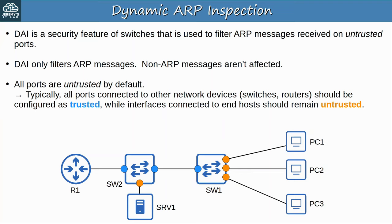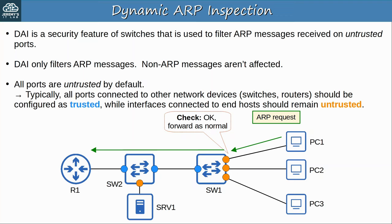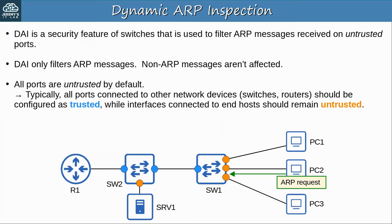Here's how DAI works — basically the same as DHCP snooping. PC1 sends an ARP request. Because it arrives on an untrusted port, SW1 uses DAI to inspect it. It determines the message is okay, so it forwards it to SW2. SW2 doesn't inspect it because it receives the message on a trusted interface, so it forwards it to R1, which sends the reply. This reply isn't inspected by SW2 or SW1 because they receive it on trusted interfaces. If PC2 sends an ARP message, SW1 inspects it and decides to discard it because it violates the rules of DAI.